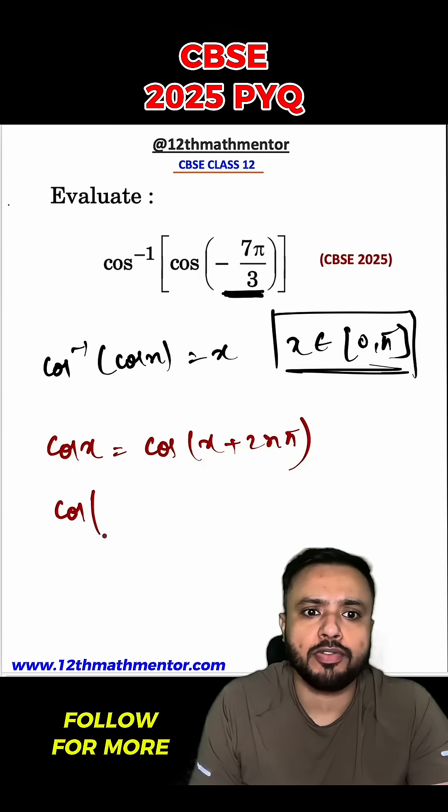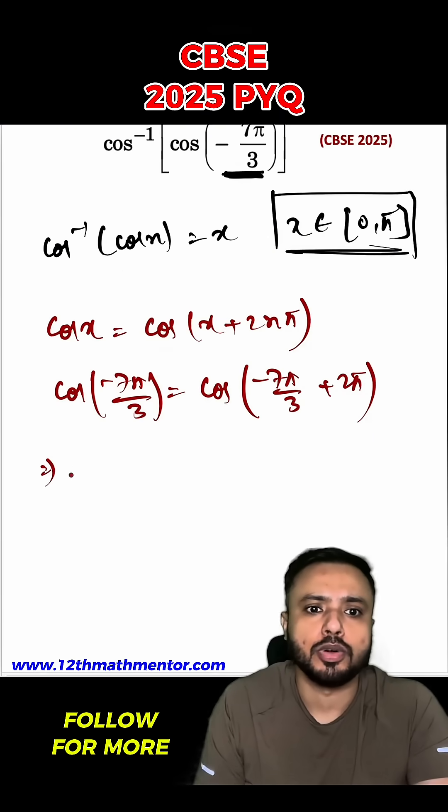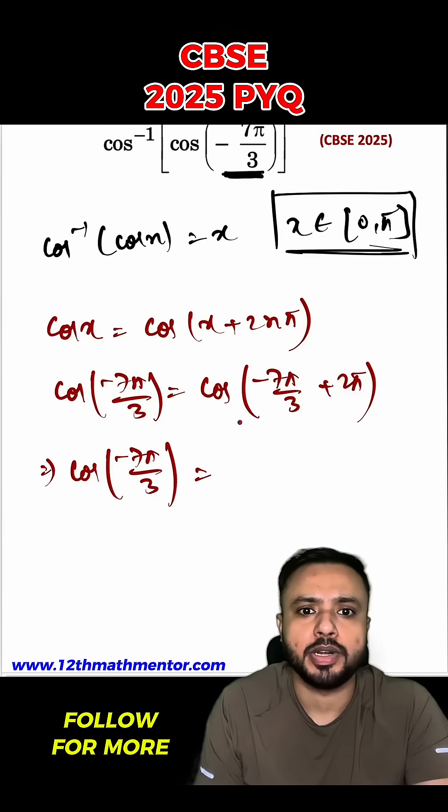Hence cos of negative 7 pi by 3 is going to be exactly equal to cos of negative 7 pi by 3 plus 2 pi. So cos of negative 7 pi by 3 can be written as cos of negative pi by 3.